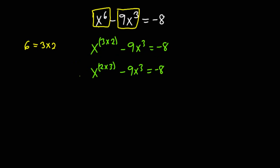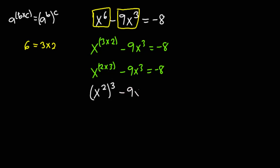From the law of indices, it states that a exponent b times c is the same as a exponent b, everything exponent c. Applying that here, I can write x exponent 2 times 3 as x squared, everything exponent 3, since 2 times 3 gives x exponent 2 times 3. So all these minus 9x cubed is equal to negative 8.